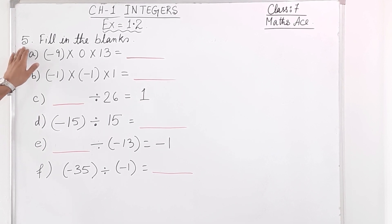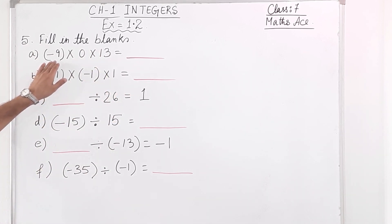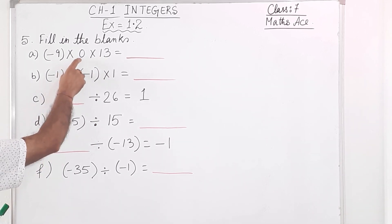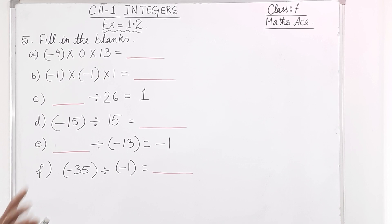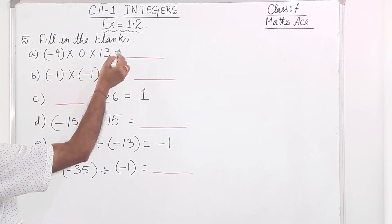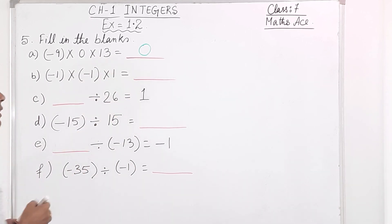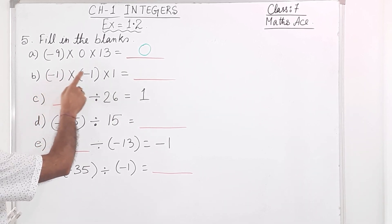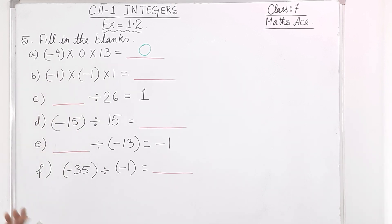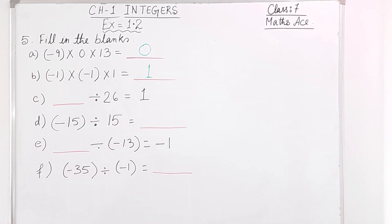Now we are going to solve Question 5: Fill in the blanks. First blank: minus 9 times 0 times 13 equals dash. Since 0 is there, anything multiplied by 0 is 0 only — so the answer is 0. Next: minus 1 times minus 1 times 1. Minus into minus is plus, so 1 times 1 is 1. The answer is plus 1.